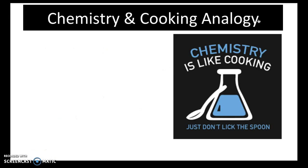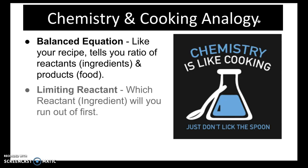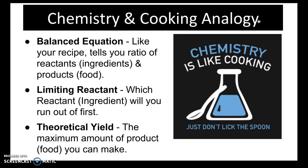You've probably heard this analogy before about chemistry and cooking. When you think of chemistry, you can think of the process you go through when you're cooking. The balanced equation is like your recipe — it tells you the ratio of reactants, which are like your ingredients, and the food you can make, which is your product. The limiting reactant is the reactant you'll run out of first, and the theoretical yield is the maximum amount of product or food you can make.